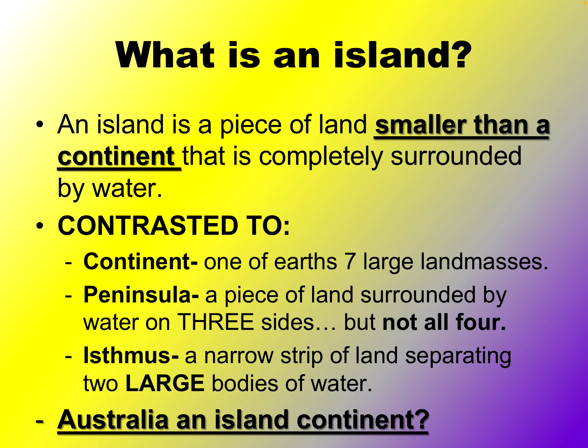Some people also confuse peninsula with island. A peninsula is a piece of land surrounded by water on three sides but not all four — it juts out into the water. An isthmus is a narrow strip of land separating two large bodies of water, like the Isthmus of Panama.